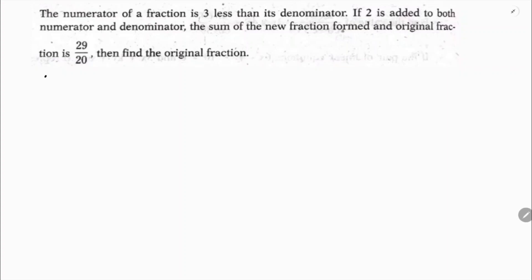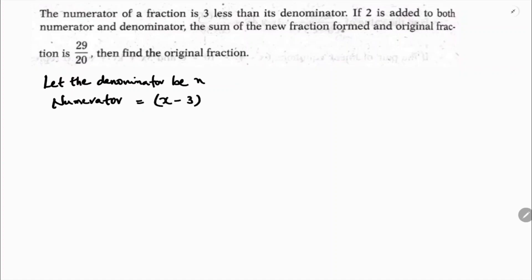Let the denominator be x. They told very clearly in the question, the numerator is 3 less than its denominator. So numerator is x minus 3. The fraction is: numerator x minus 3, denominator x. This is the fraction.